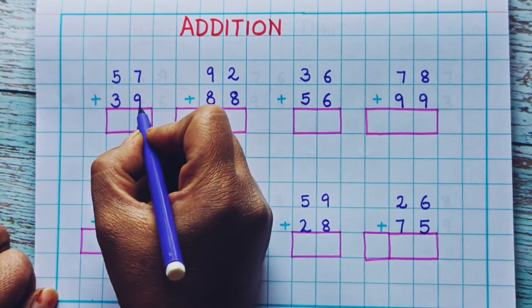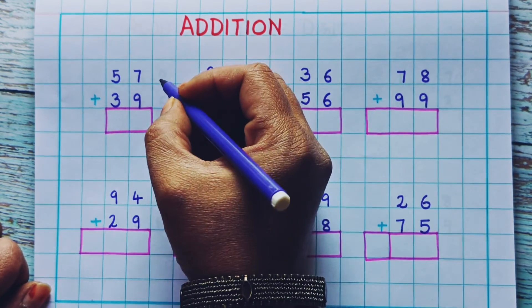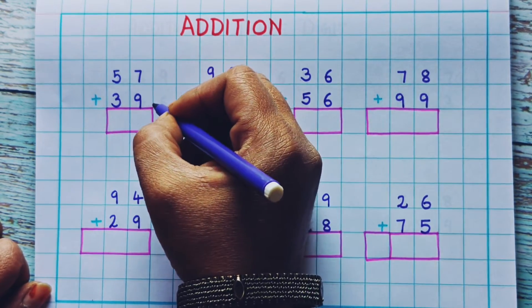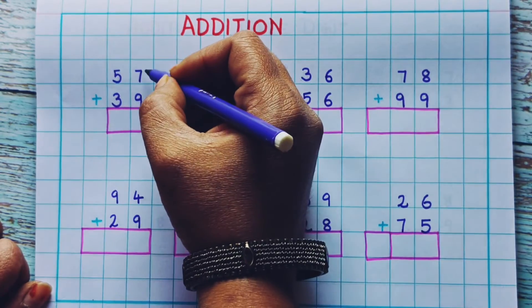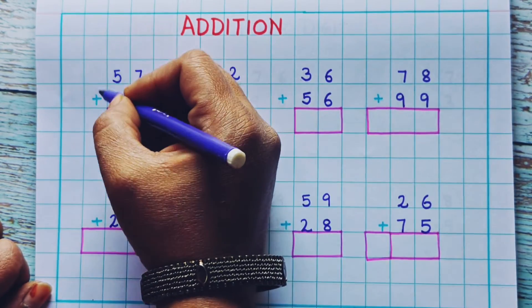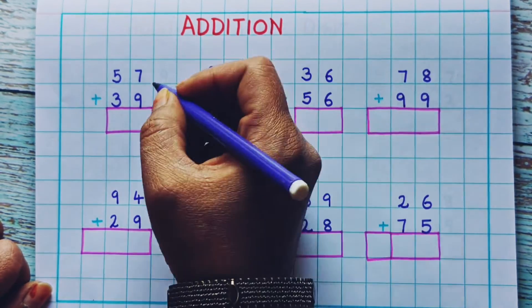57 plus 39. Always remember the addition begins from the ones place and then moves towards the left: ones place, then tens place, then hundreds place. Let's see this.